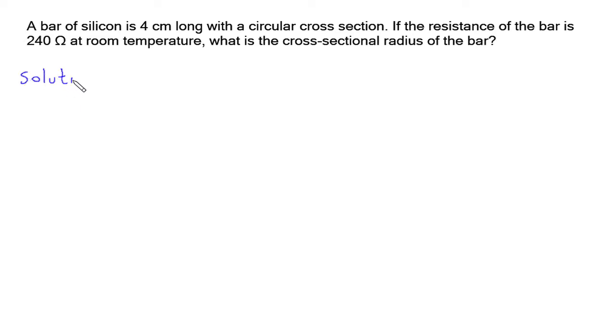Solution. What we have? The length of silicon bar L equals 4 cm, which in meters is 4 times 10 to the minus 2 meters.